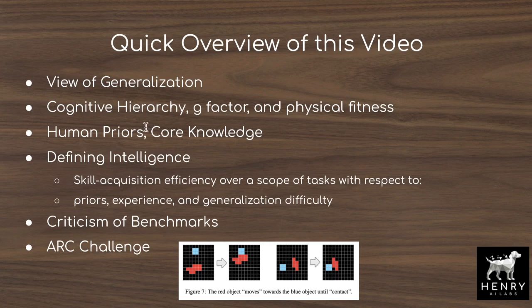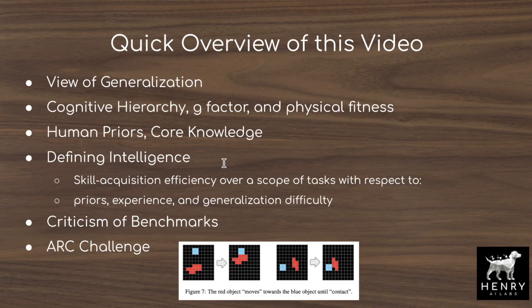Then we'll look at human priors and core knowledge. The definition of intelligence that comes out of this paper is skill acquisition efficiency over a scope of tasks with respect to priors, experience, and generalization difficulty. Chollet defines different priors — humans have priors illustrated in core knowledge, things like agentness, object permanence, and others. We're trying to connect human priors with our machine learning algorithms' priors — things like convolutional neural networks, data augmentation, and consistency regularization are all examples of priors we put into machine learning algorithms.